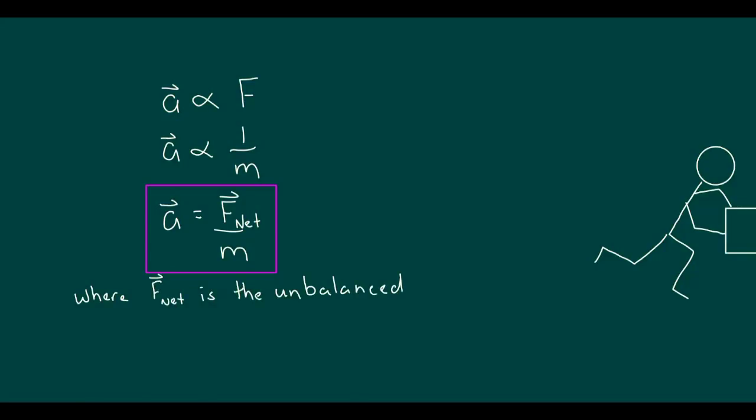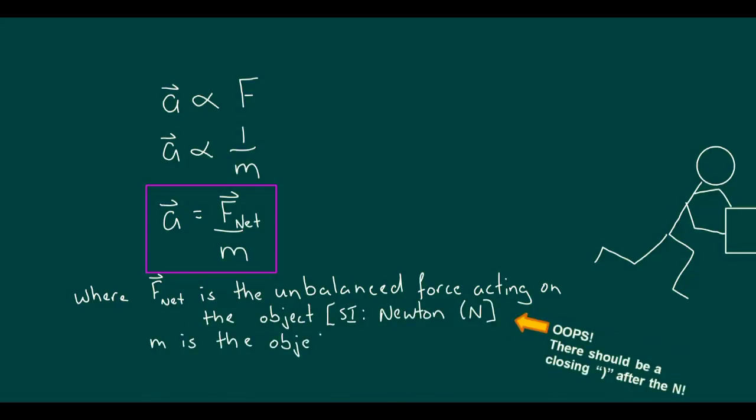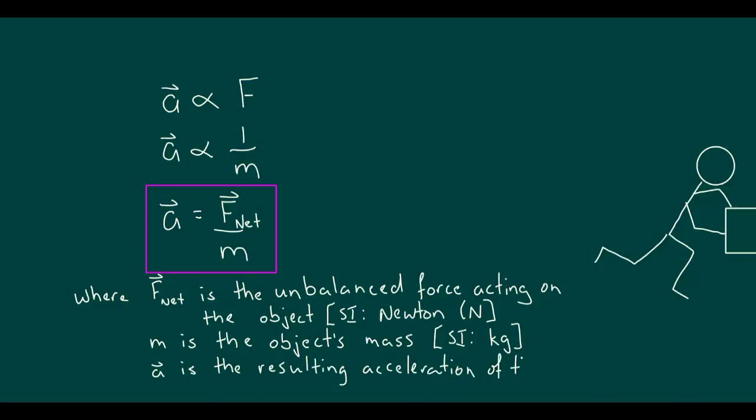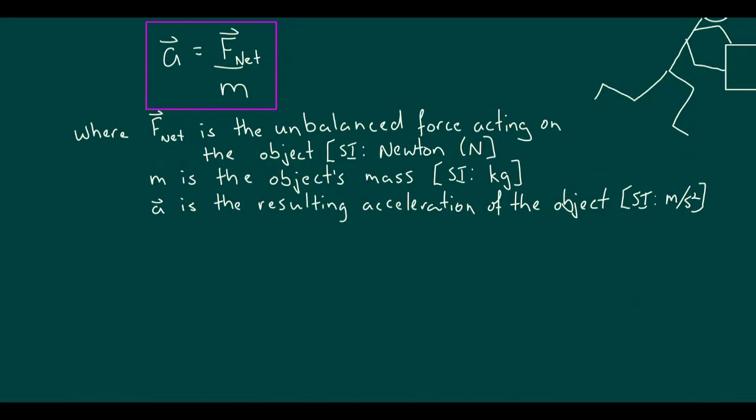Strictly speaking, we refer to this unbalanced force as a net force. And here are the meanings of the variables in this expression. The standard international unit for force is the Newton. We use the letter N to represent this measurement unit, while the standard units for mass and acceleration are the kilogram and meter per second squared. Now, to get a sense of this derived measurement unit, the Newton, we'll arrange this formula in its more common variant, F equals MA. So here, 1 newton is equal to the product of 1 kilogram and 1 meter per second squared.